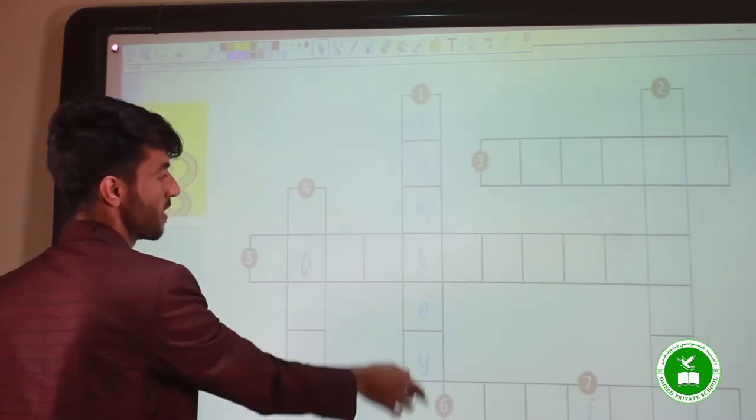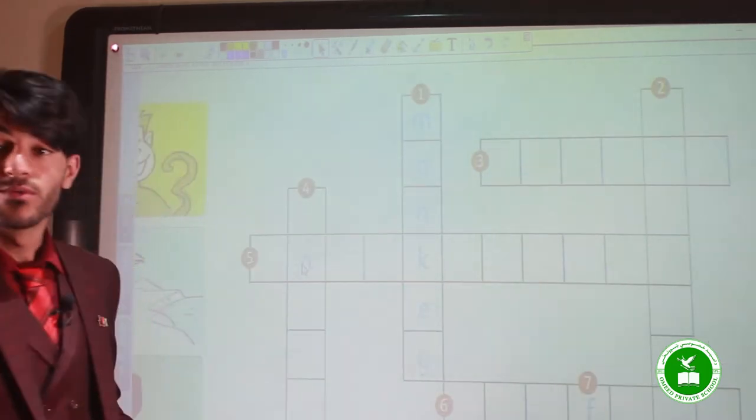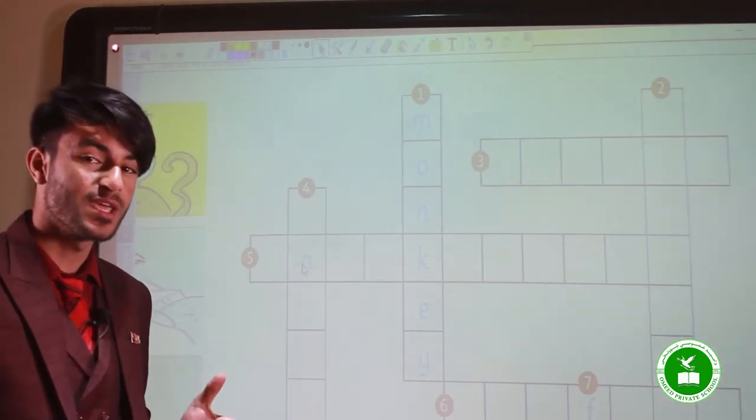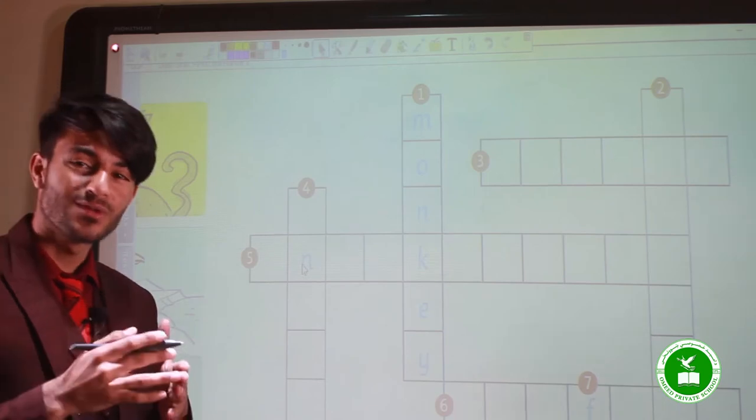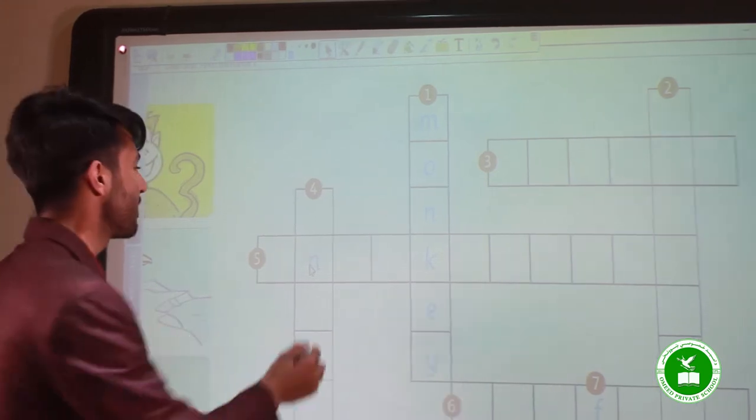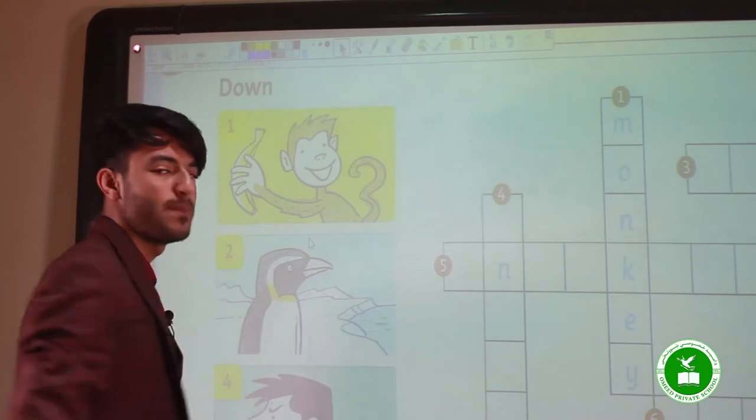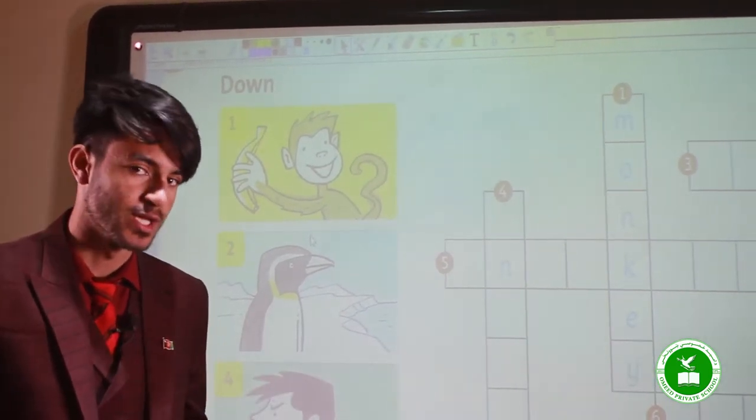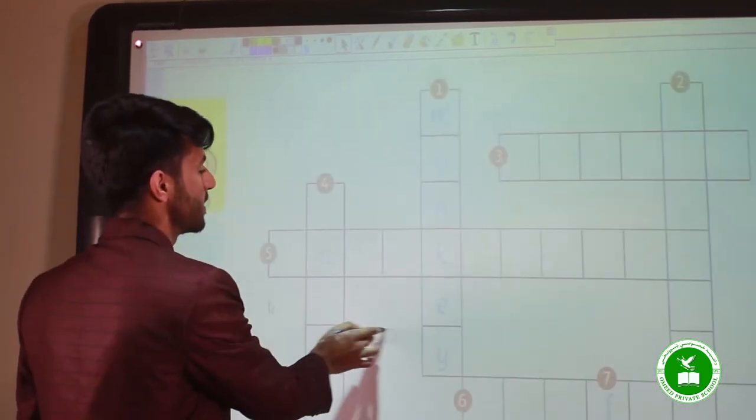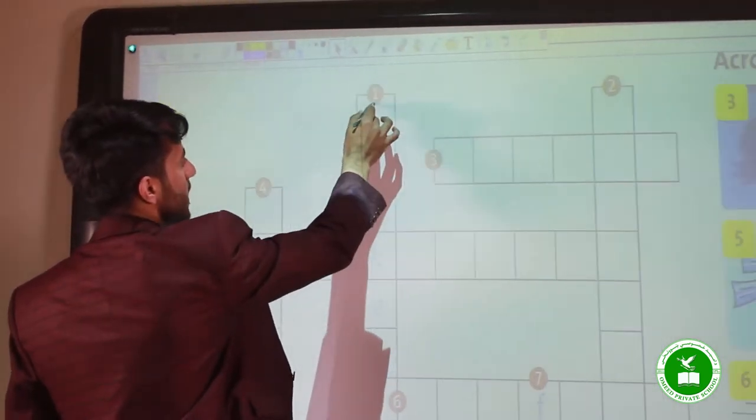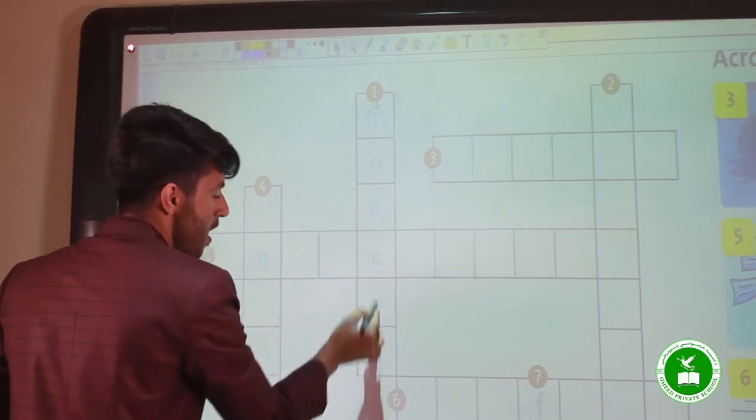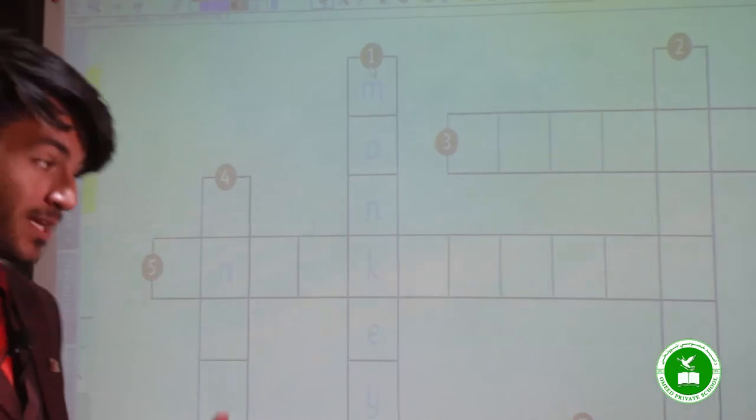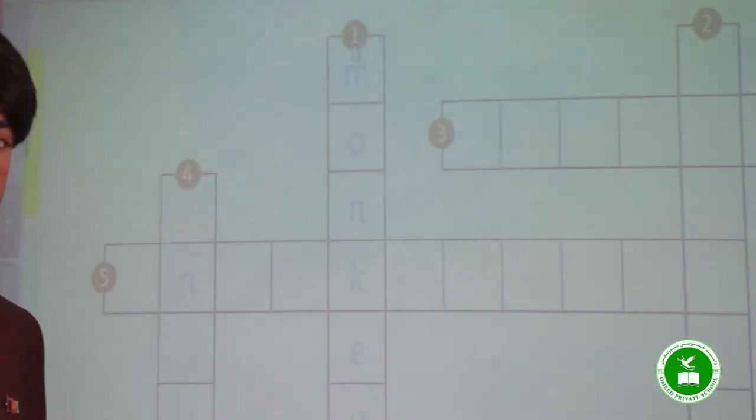Number one, complete the crossword. We have a game here, a crossword game. For example, the first one: what do you see in the picture? Monkey. I will write monkey.